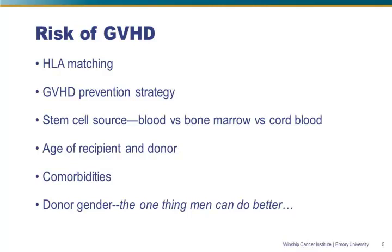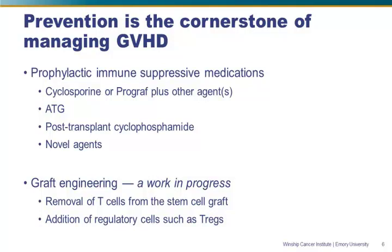The management of graft-versus-host disease really begins with prevention. For every allogeneic transplant, there is a planned prevention strategy that falls into one of two categories: either we use medications surrounding the transplant to suppress the donor immune system as it adapts to being inside the host, or we engineer the graft to eliminate cells likely to cause graft-versus-host disease. Both strategies are a work in progress — we have not completely prevented GVHD while maintaining anti-tumor effects, and graft engineering is a little less far along in identifying ideal strategies.